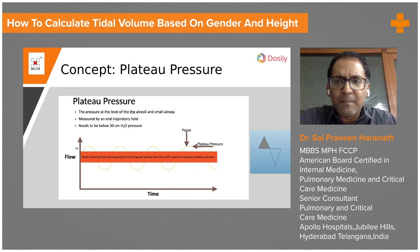With plateau pressure measurement, when you check it and it's at about 30 centimeters of water pressure, you're measuring the actual pressure the lung is experiencing. When it goes beyond 30, you end up with difficulty and lung damage. This is the concept of barotrauma. You can also have volutrauma, and you can also have a concept of atelectotrauma, where the lung collapses and opens up very rapidly. These concepts will become clearer by the end of the lecture.